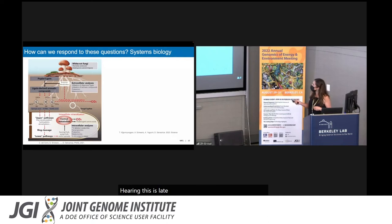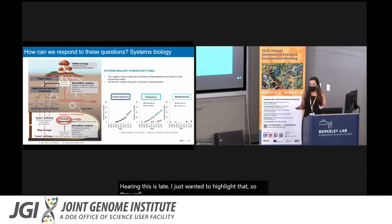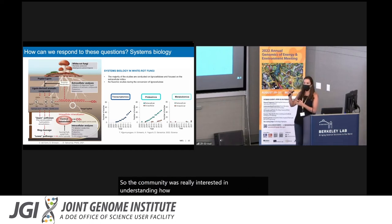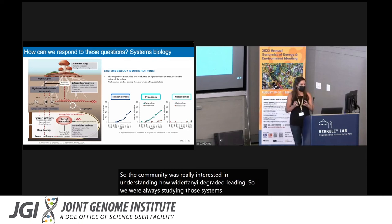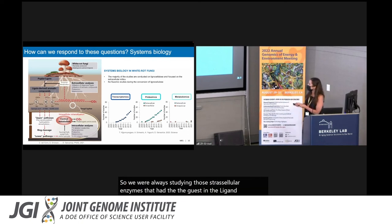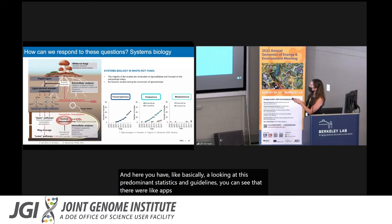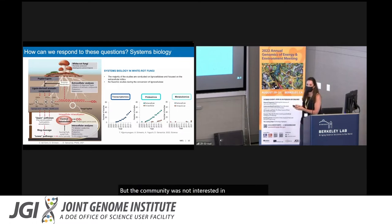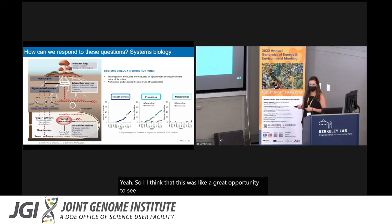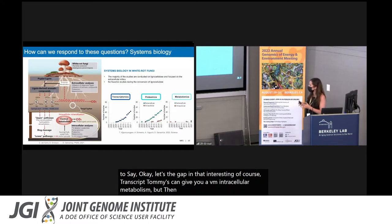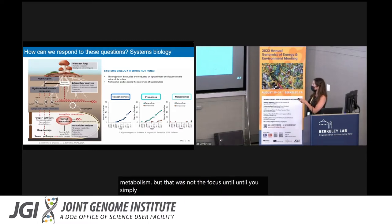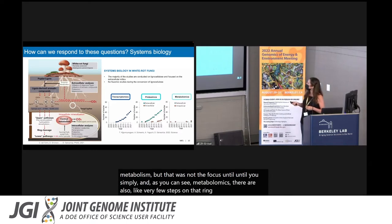In this slide, I just wanted to highlight that the community was really interested in understanding how white rot fungi degrade lignin. So we were always studying those extracellular enzymes that are digesting the lignin. Here you have, basically, looking at these proteomic studies in white rot fungi, you can see that there were up to 50 studies studying those extracellular enzymes. But the community was not interested in understanding what happens inside the fungi. I think that this was a great opportunity to say, let's dig up in that intracellular metabolism. Of course, transcriptomics can give you an idea on the intracellular metabolism, but that was not the focus until recently. As you can see, metabolomics, there are also very few studies in that regard. So great opportunity.